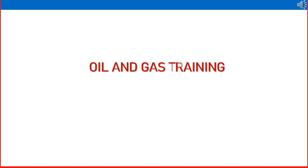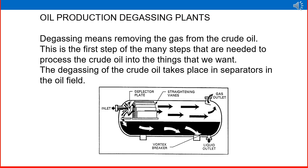Welcome to this video on oil production degassing plants. Degassing means removing the gas from the crude oil. This is the first step of the many steps that are needed to process the crude oil into the things that we want. The degassing of the crude oil takes place in separators in the oil field.